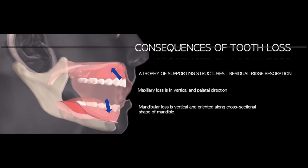When a patient loses their teeth, there are consequences. Atrophy of the supporting structure occurs, and residual ridge resorption typically follows tooth loss. The direction of loss in the maxilla is in a vertical and palatal direction, while mandibular loss is vertical and oriented along the cross-sectional shape of the mandible. Resorption patterns differ between the maxilla and mandible.